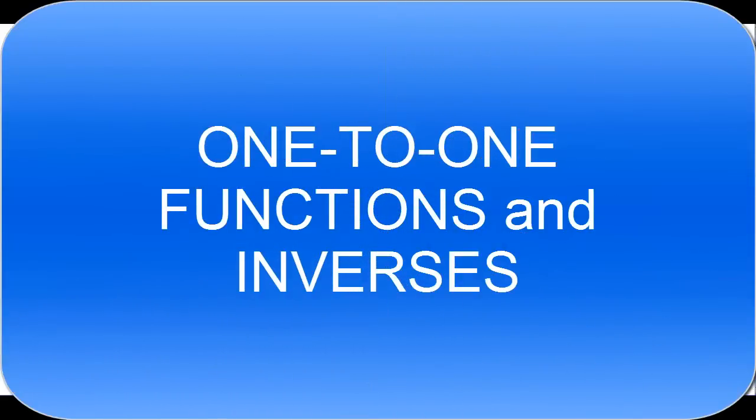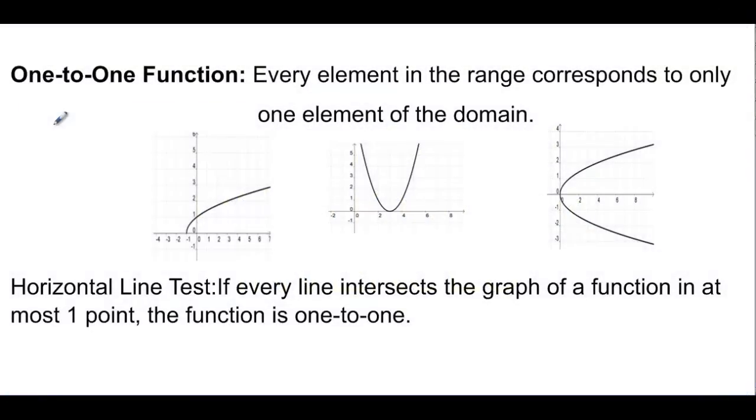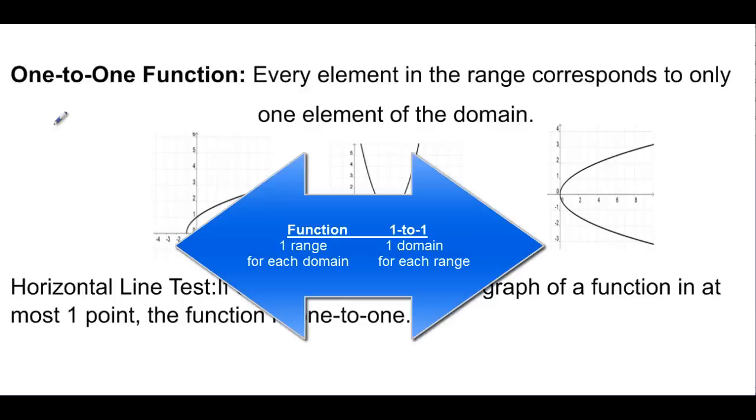This video will talk about inverses and one-to-one functions. A one-to-one function says that every element in the range corresponds to only one element of the domain. If you remember when we talked about functions, we were saying that every input or domain value had only one range value. So one-to-one is going back the other direction.